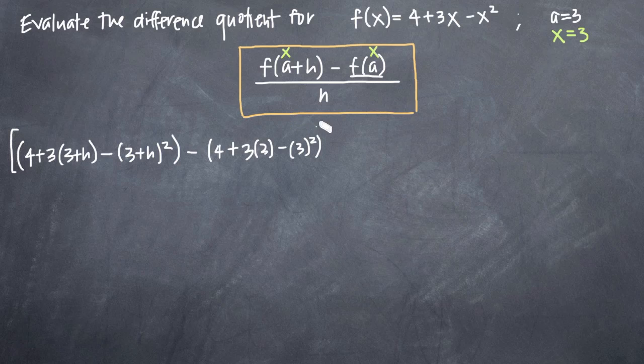For now, just to save space, we'll put it on one line and then we'll break it out later. So we'll say this whole thing divided by h. Now, we just want to simplify as much as we can.